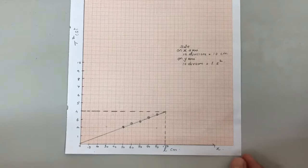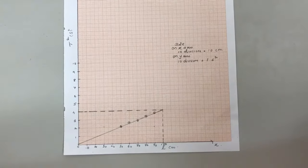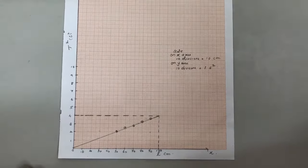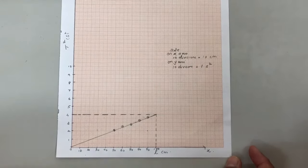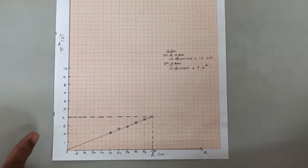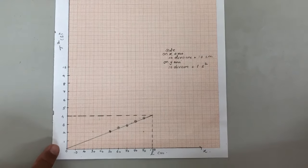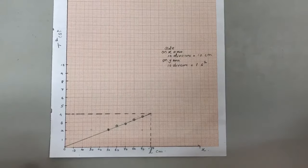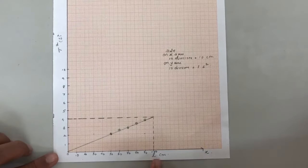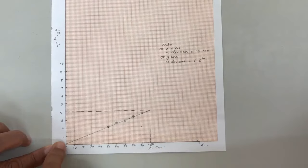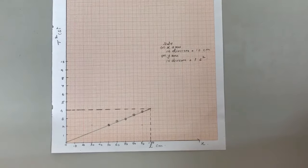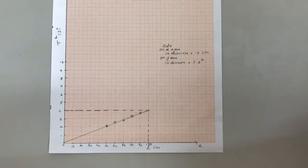To find the length of the second pendulum, plot a graph between L on the x-axis and T² on the y-axis. Choose an appropriate scale — here, 10 divisions equals 10 centimeter on the x-axis and 10 divisions equals 1 second² on the y-axis. Plotting the data gives an approximate straight line. From the graph, when the length is approximately 100 centimeter, T² equals 4, so the length of the second pendulum from the graph is 100 centimeter.